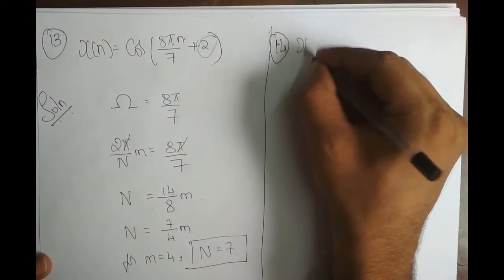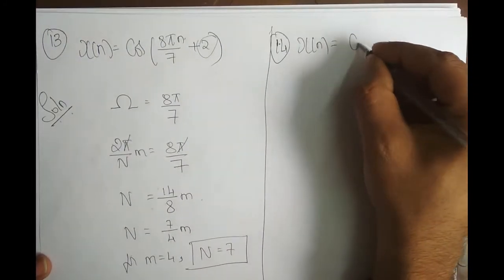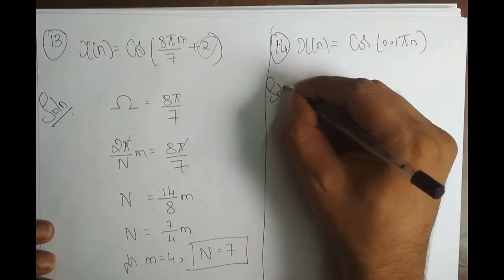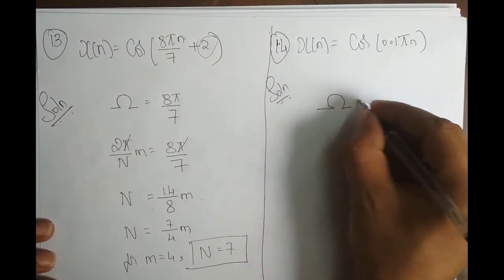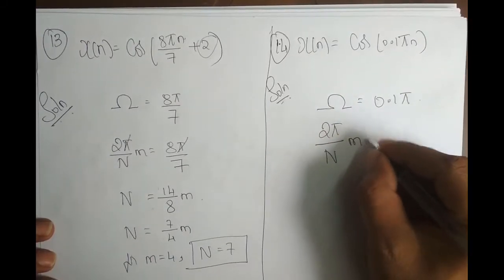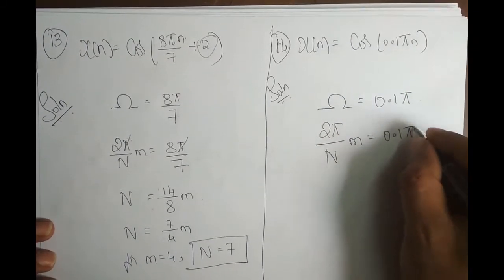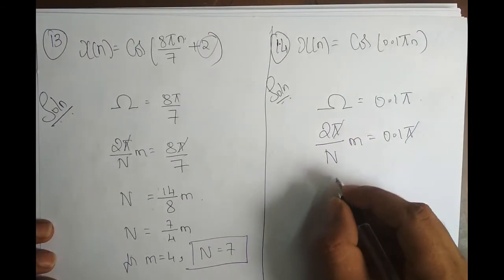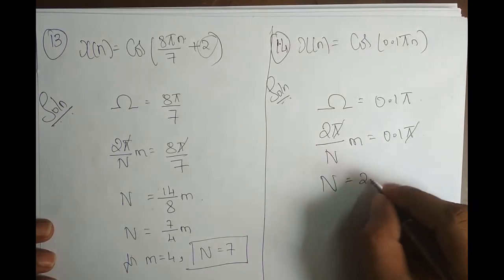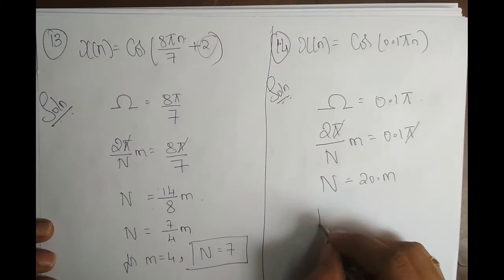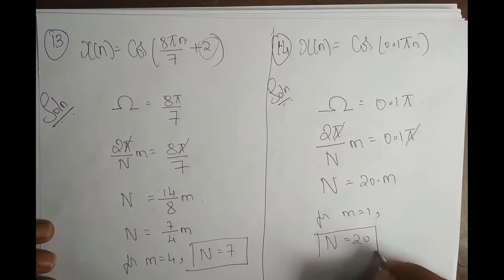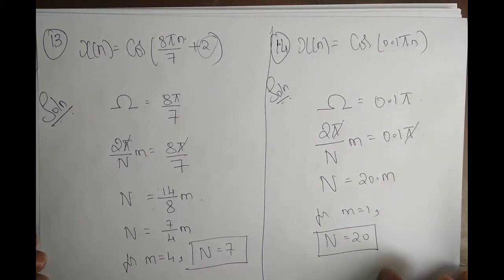Problem 14: x of n equals cos of 0.15n. So omega equals 0.15. Setting 2 pi M by N equals 0.15 and solving, N equals 2 pi M by 0.15, which gives N equals 20M. For M equals 1, N equals 20. Therefore, the signal repeats after every 20 samples.